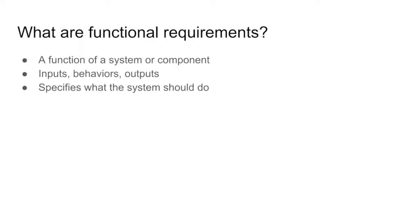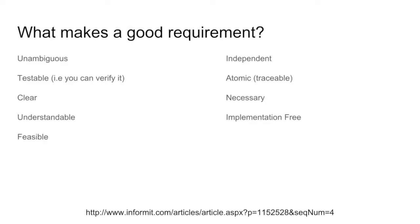These are typically the requirements that you've been developing in this course. When you think about what makes a good requirement, it's helpful that it's unambiguous — clear and easily understood. It's testable, clear, understandable. The requirement is actually feasible. It's independent, traceable, necessary, as well as implementation free.